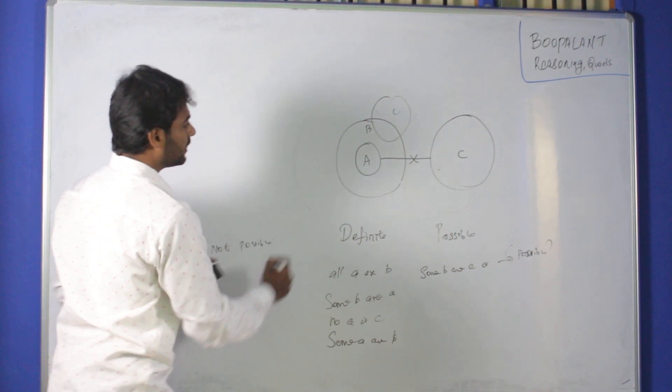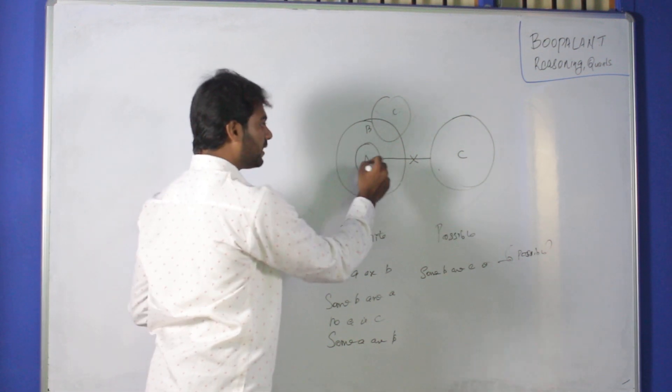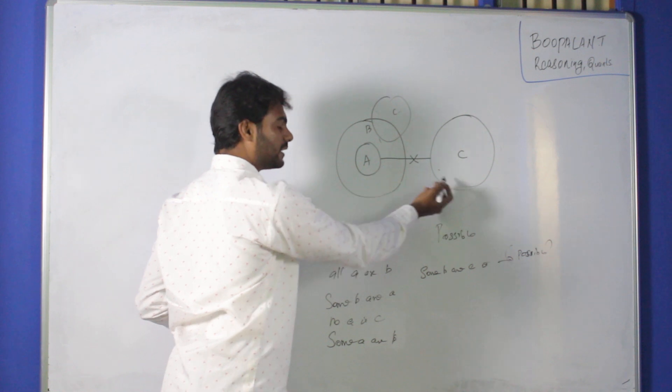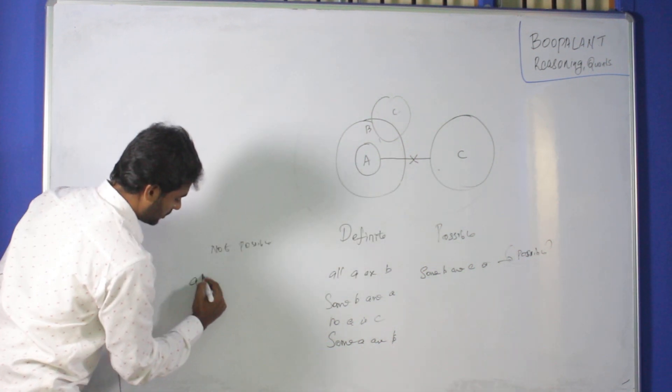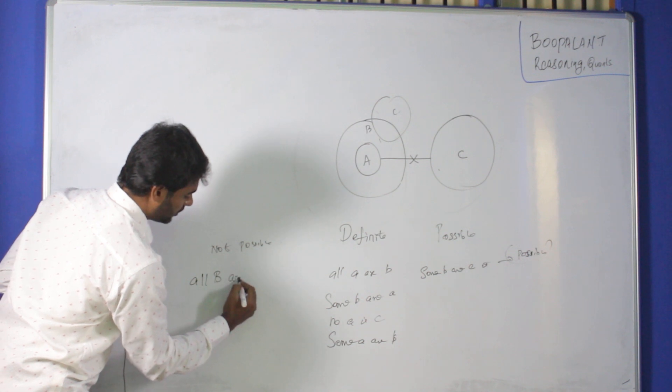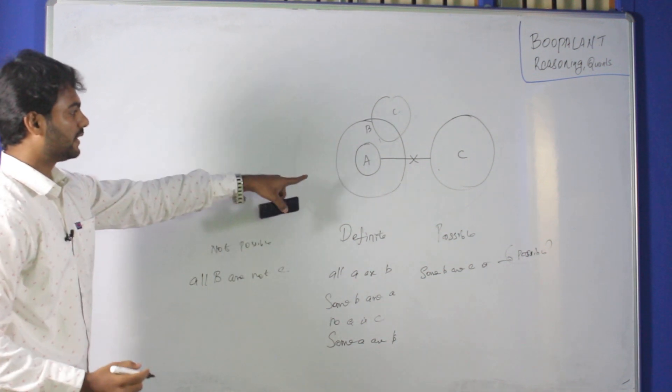Not possible. All B or C, why are all B or C? Because some A or B, and A is not C. So they have a definition, so this is a definite conclusion.